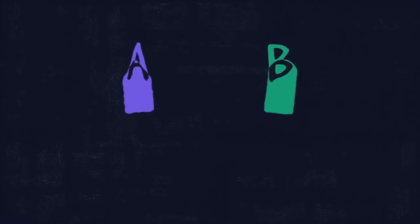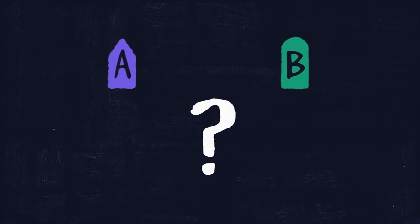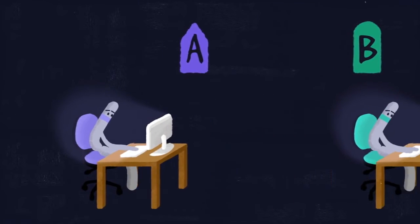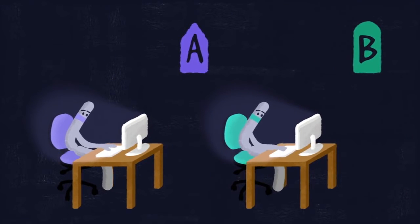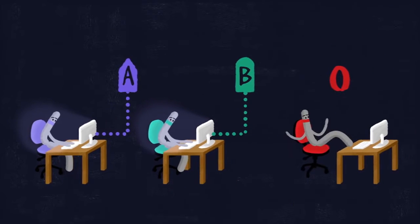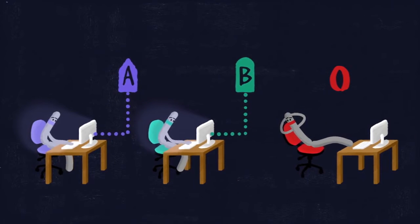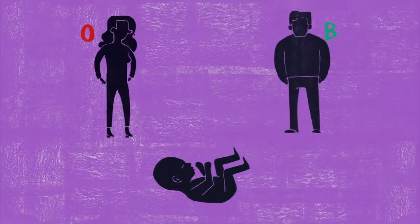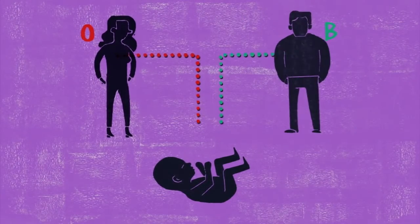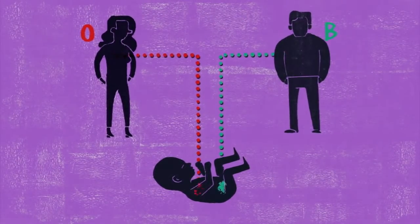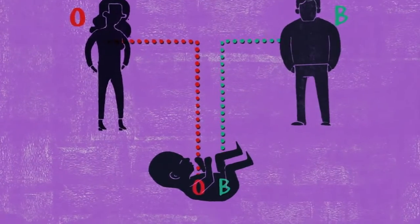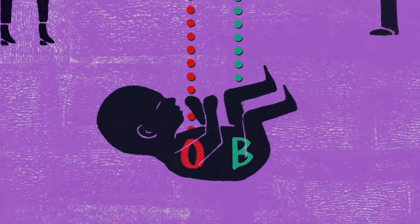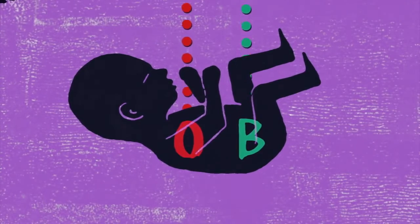But how do we get four blood types from only two antigens? Well, the antigens are coded for by three different alleles, varieties of a particular gene. While the A and B alleles code for A and B antigens, the O allele codes for neither. And because we inherit one copy of each gene from each parent, every individual has two alleles determining blood type. When these happen to be different, one overrides the other depending on their relative dominance.